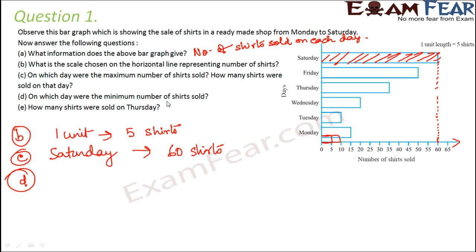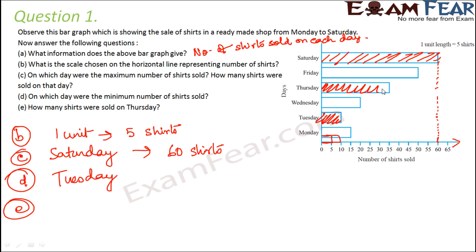Fourth: on which day were the minimum number of shirts sold? The smallest bar is on Tuesday. How many shirts were sold on Thursday? Thursday's bar ends at 35, so 35 shirts were sold on Thursday.